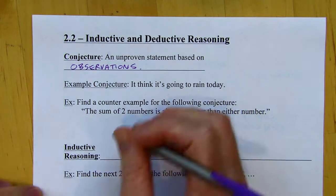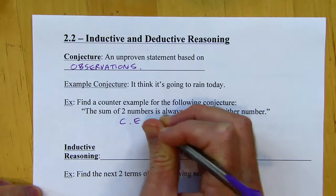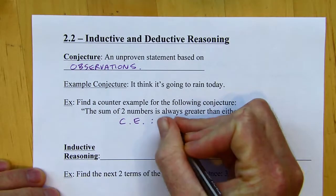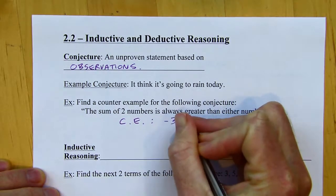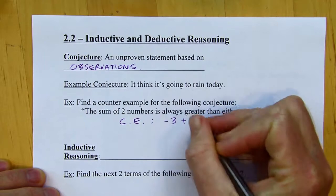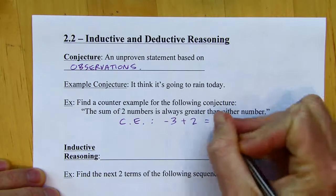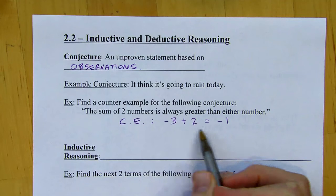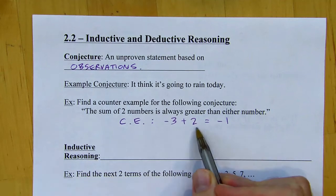My counterexample — I'm using CE for counterexample — is: negative three plus two equals negative one. My sum is not greater than both of the numbers. It's greater than negative three, but it's not greater than two.